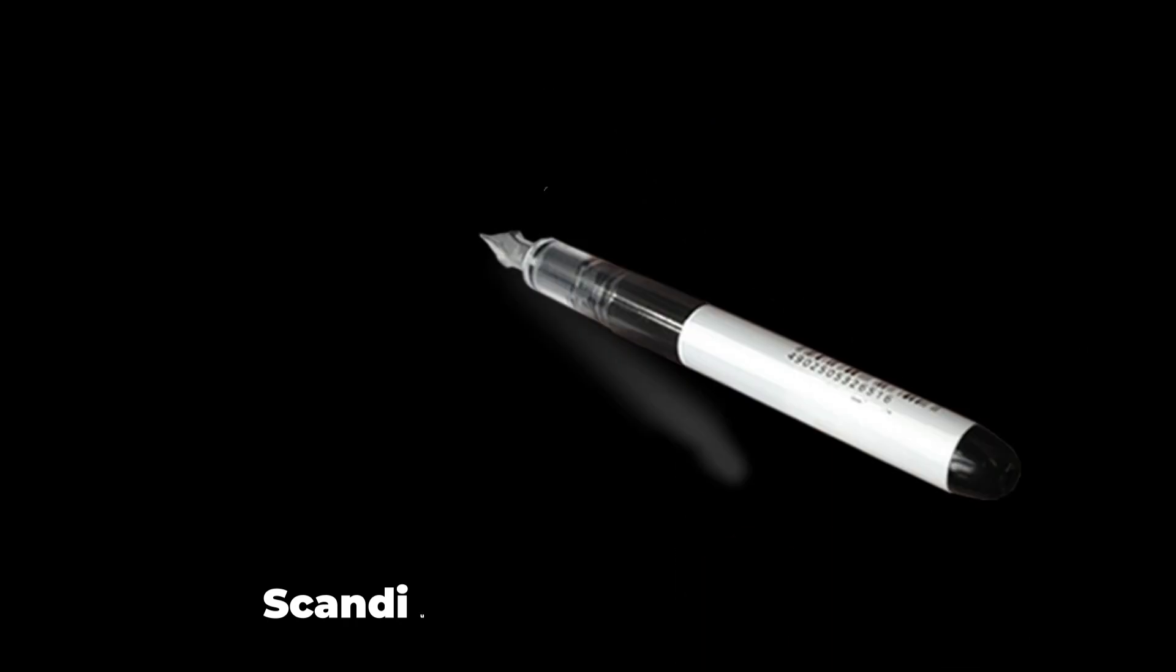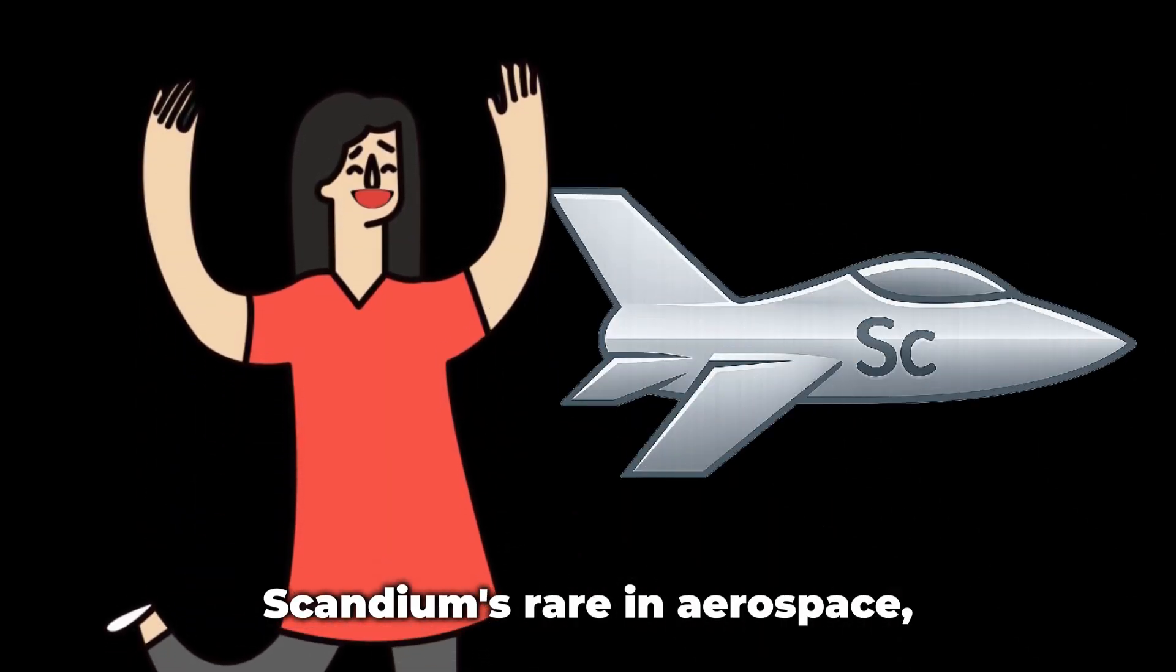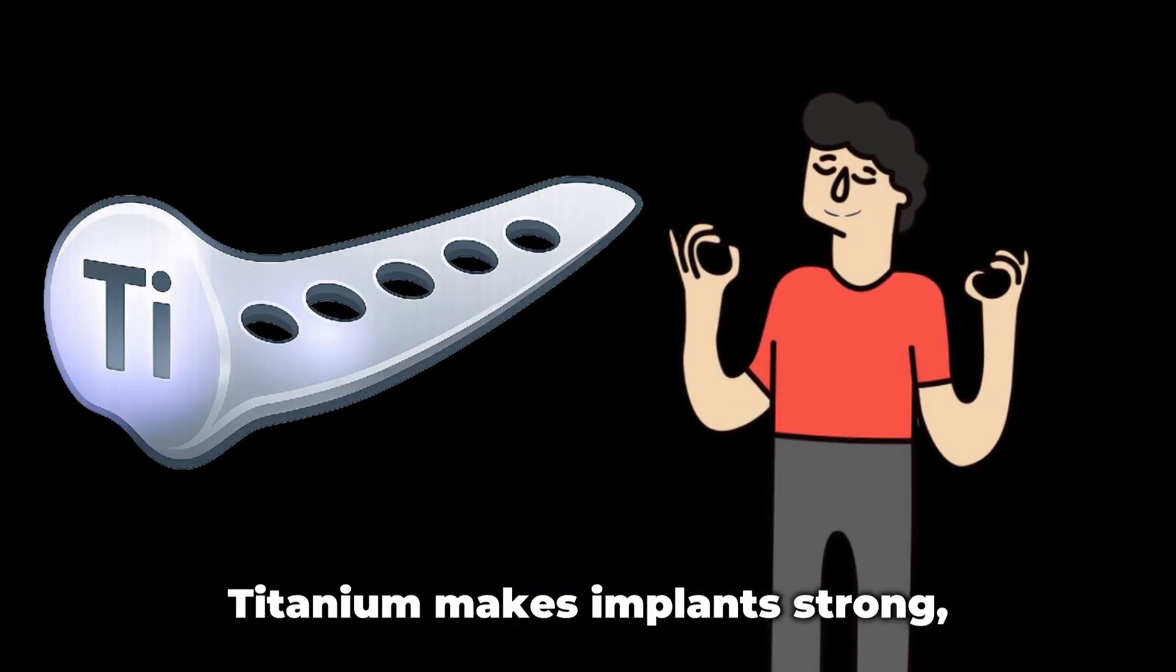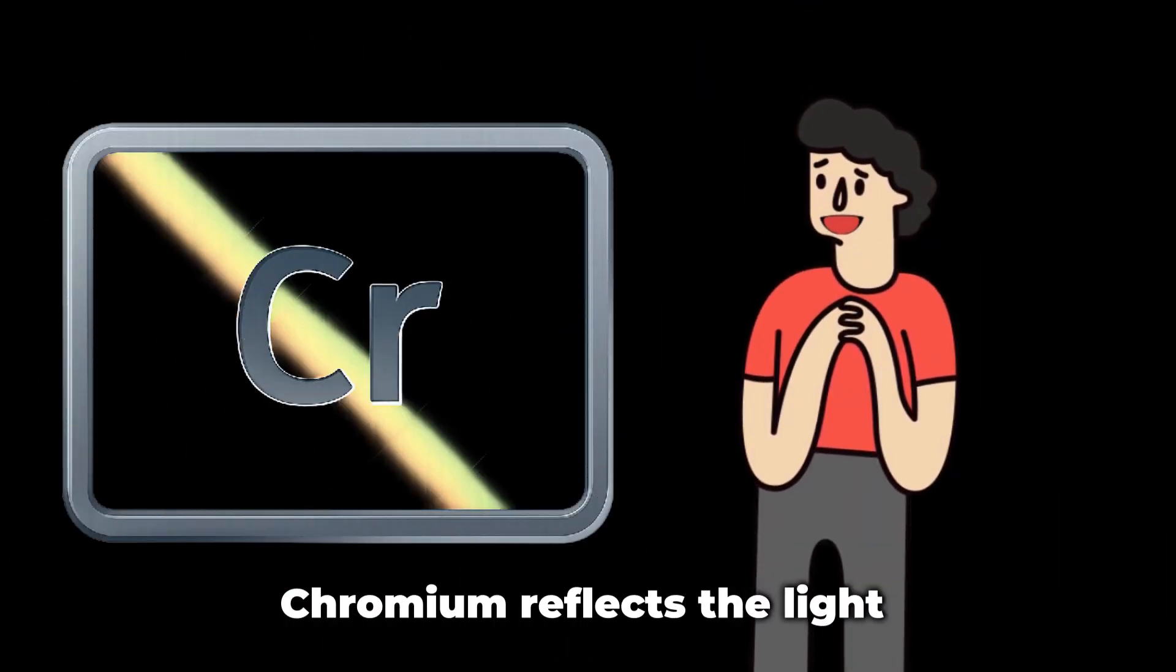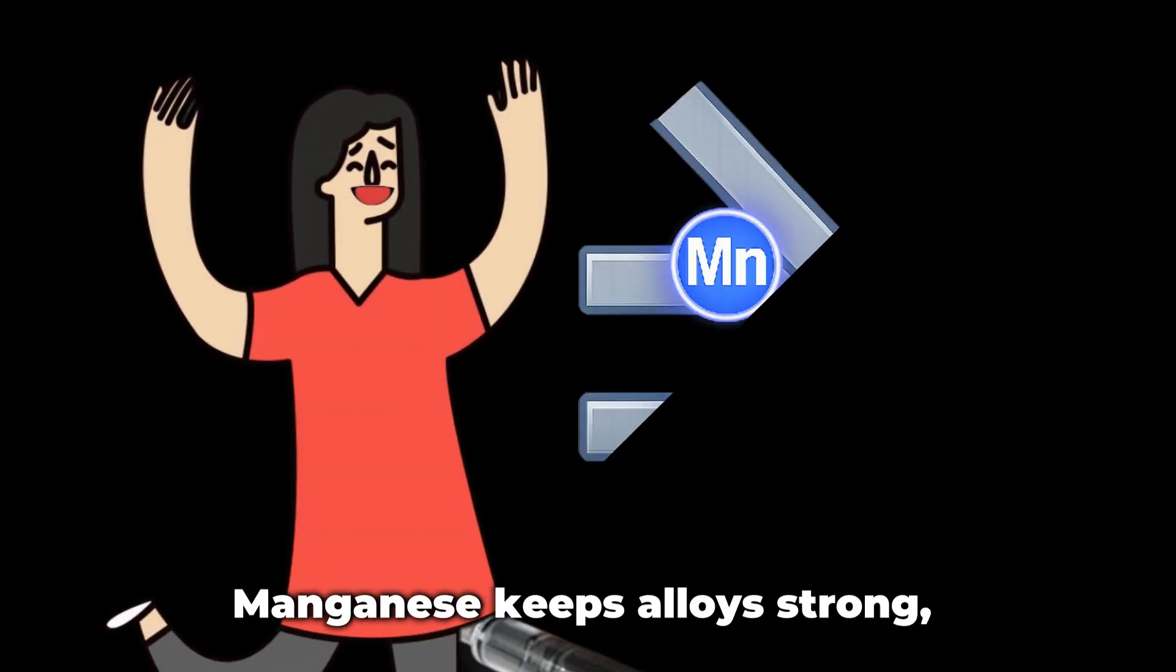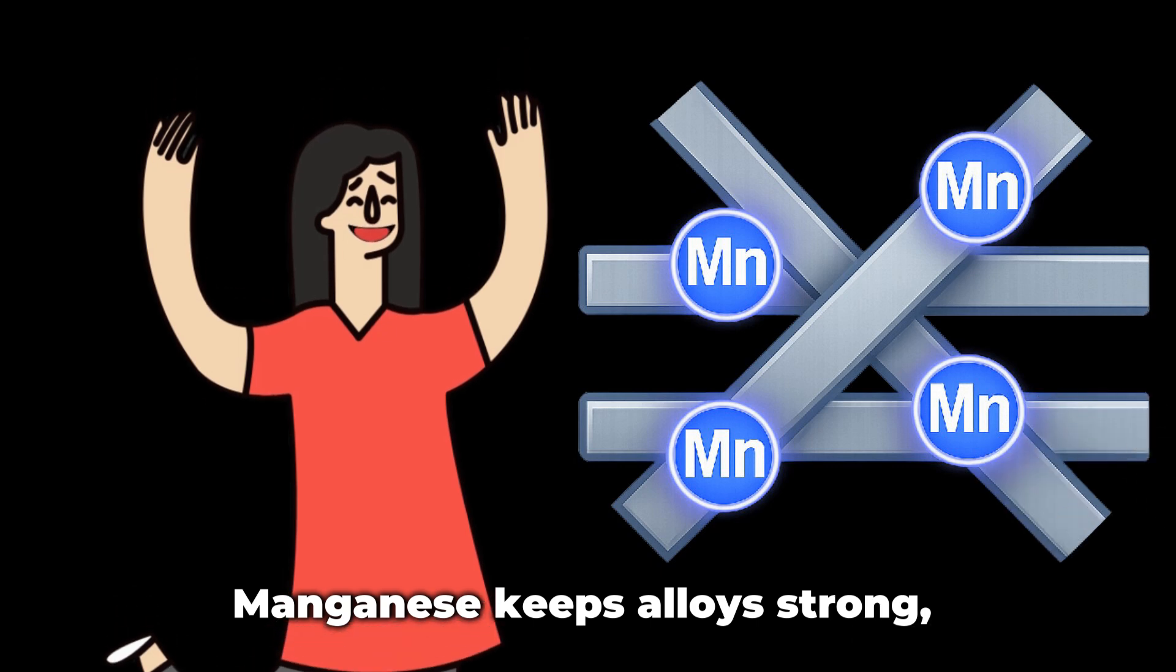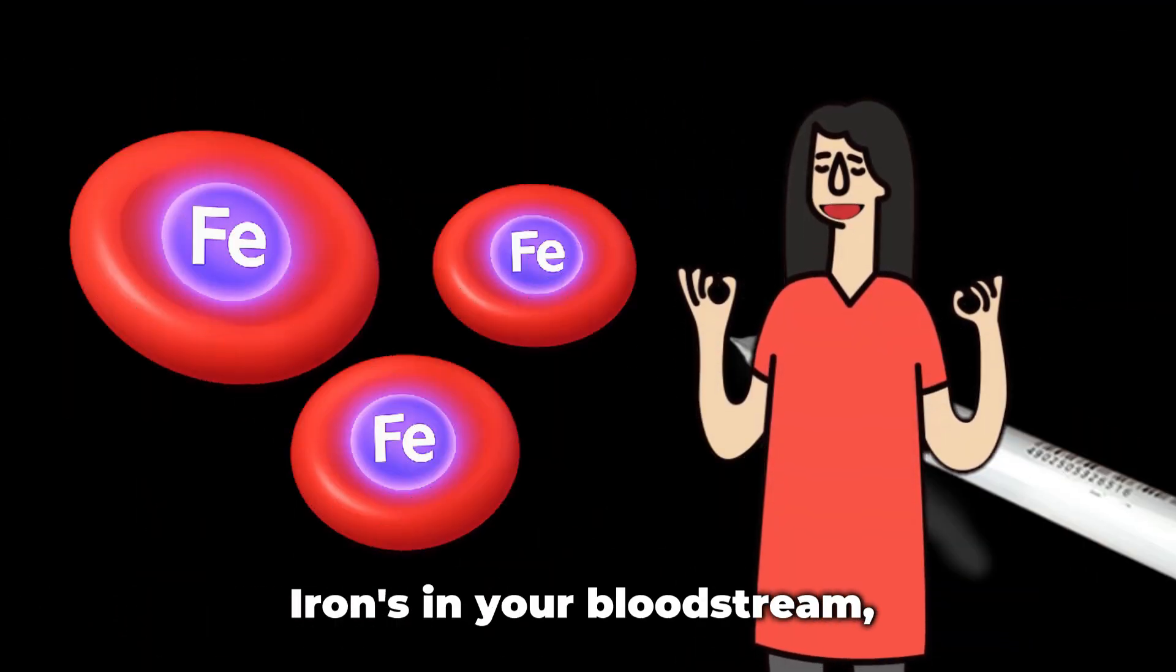Scandium's rare in aerospace. Vanadium makes implants strong and steel so tough. Chromium reflects the light. Manganese keeps alloys strong. Iron's in your bloodstream.